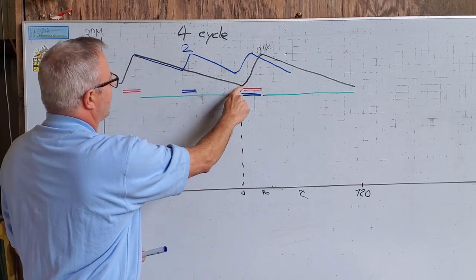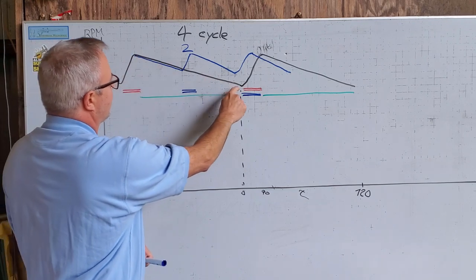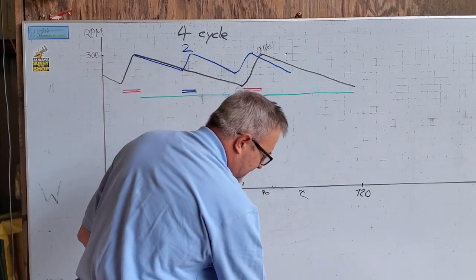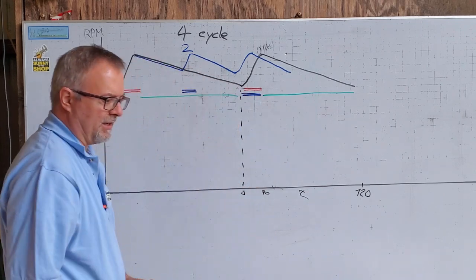And we're taking energy out for the remainder of that stroke. Well, what did we do? We took that loss from here to here and we basically cut it in half with a two-cycle engine. Now let's look at a steam engine.